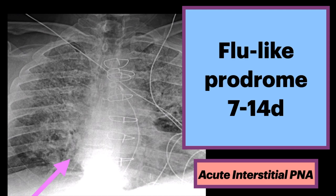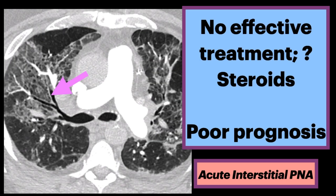This AP chest X-ray of an adult male with AIP during the early phase shows diffuse bilateral heterogeneous and reticular opacities. The corresponding CT of the same patient shows crazy paving and bronchiectasis.